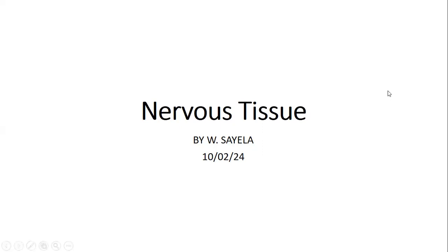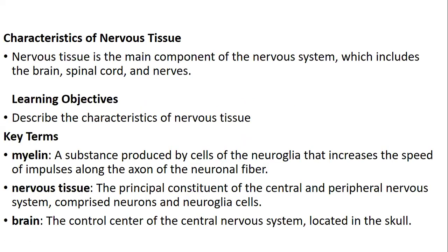So the last presentation we were talking about the connective tissue, and now in the nervous tissue, we are saying the nervous tissue is actually the main component of the nervous system. The nervous system is divided into the brain and the spinal cord as well as the nerves. It is also divided into the central nervous system and the peripheral nervous system.